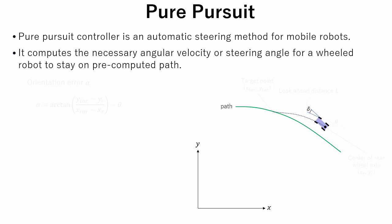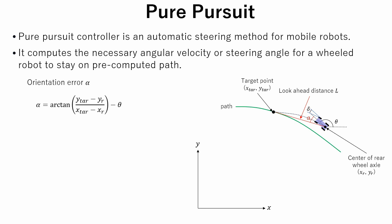To calculate the correct steering angle, we should know orientation error. Orientation error is represented as a difference of the line that connects the target point and the center of robot rear wheel axle and current robot heading direction. Note that angle origin is in the x direction. The angle will be positive in counterclockwise rotation direction and negative in clockwise direction.